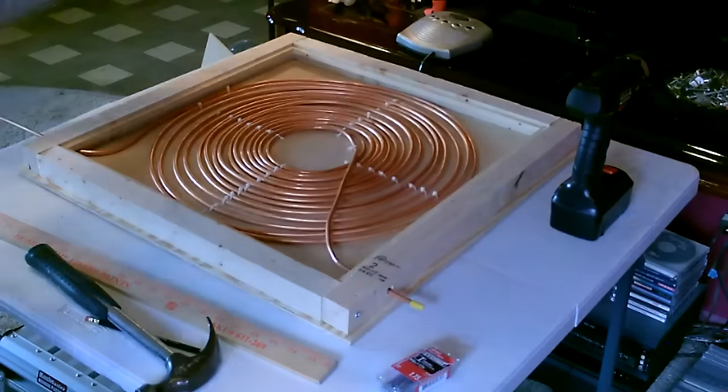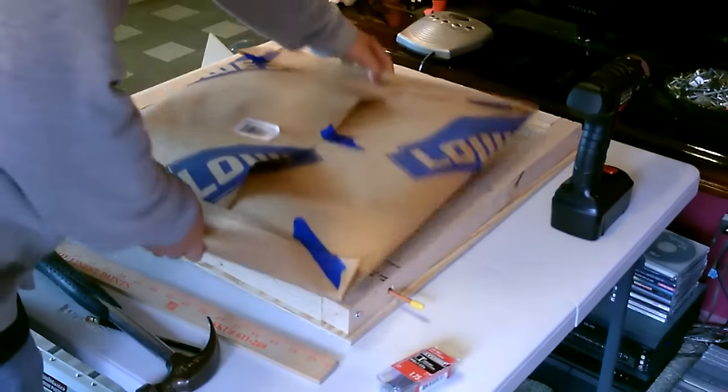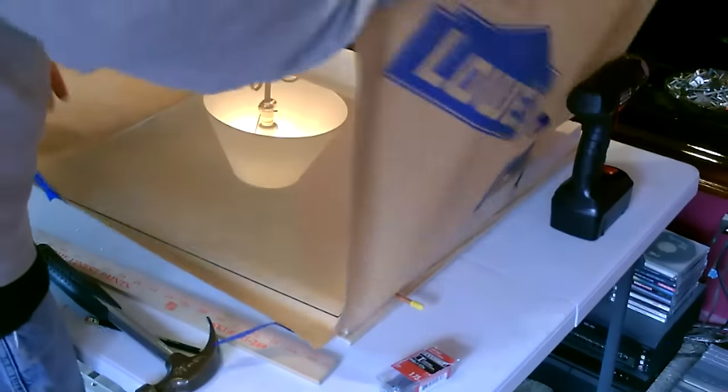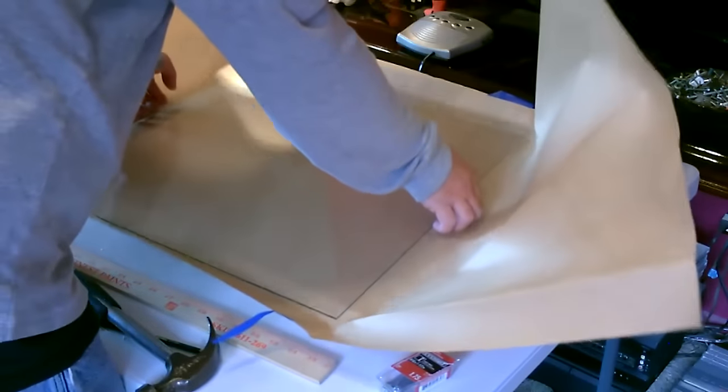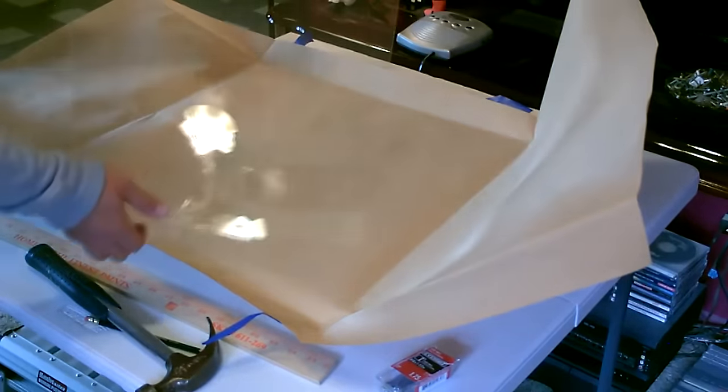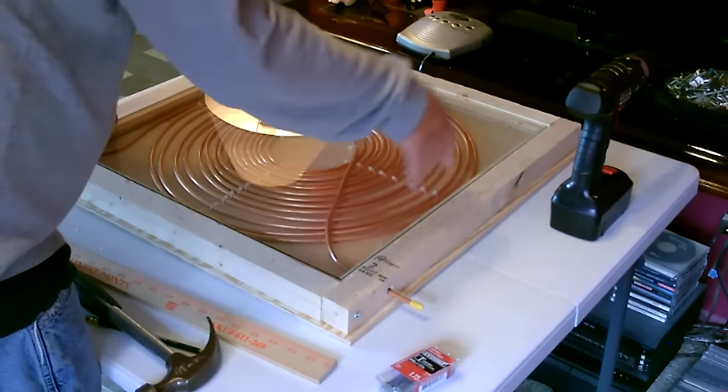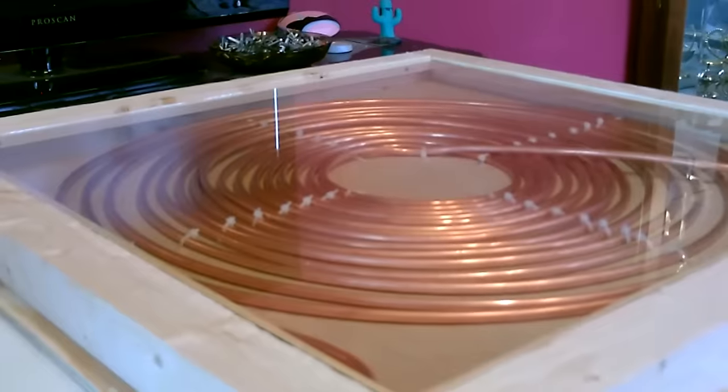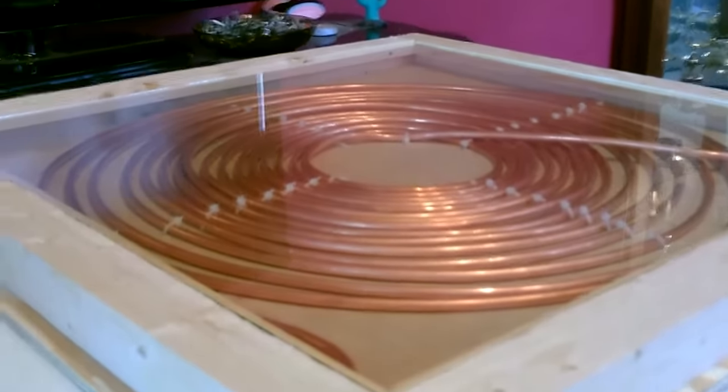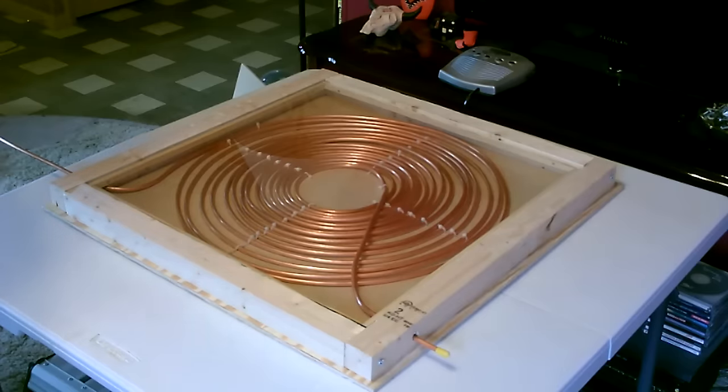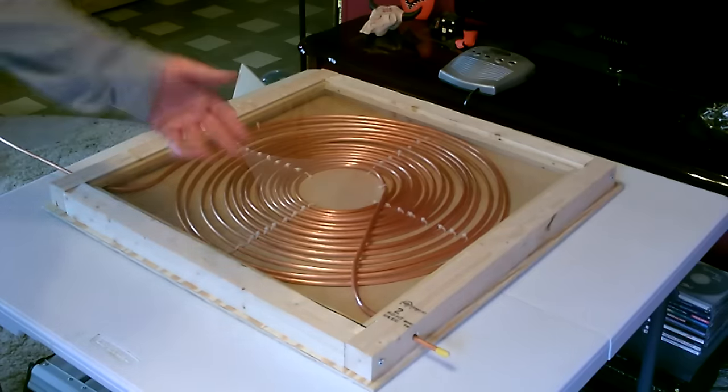Alright, now the glass. All you got to do is add the garden hose adapter assembly, paint it black, and seal it up.